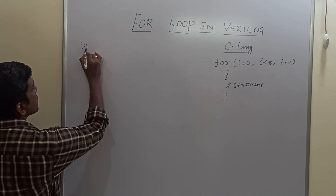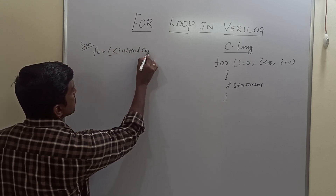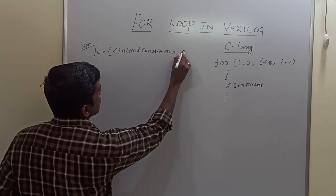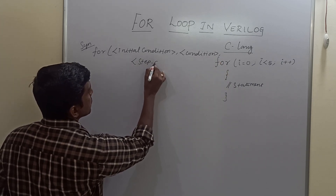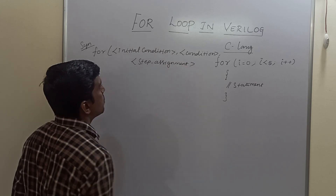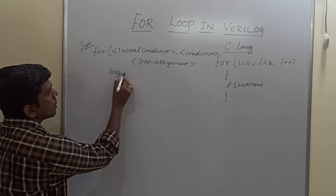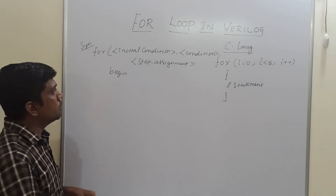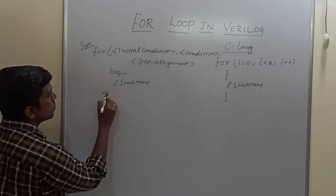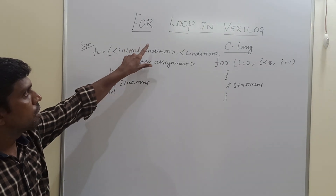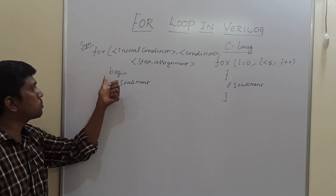Now coming to Verilog HDL, the for loop syntax has an initial condition, then the condition, then the step assignment. The key difference is that in Verilog HDL, instead of an open brace, you use 'begin', then write the statement, and instead of a close brace, you use 'end'. So the main difference between C language and Verilog HDL for loop syntax is the use of 'begin' and 'end' instead of open and close braces.